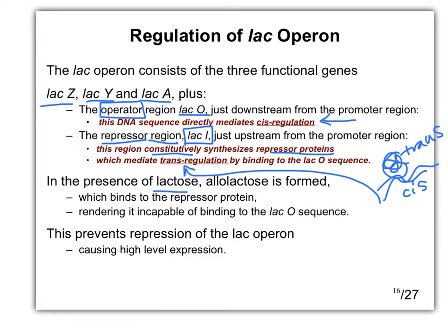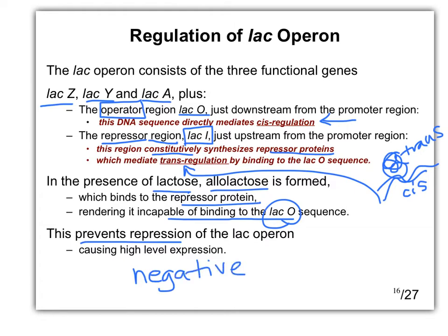When lactose is present, it forms allolactose, which binds to the repressor protein and stops it from binding to the operator, allowing transcription to occur. So allolactose stops repression. If something binds to the repressor and blocks transcription, and removing it turns transcription on, that means the lac operon is negatively regulated.